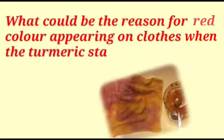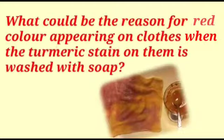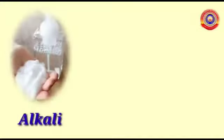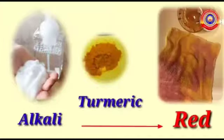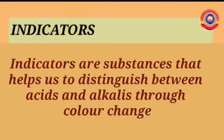What could be the reason for red color appearing on clothes when turmeric stain on them is washed with soap? Yes, soap is an alkali. Turmeric gives red color with alkali, so it is clear that turmeric is an indicator which helps to distinguish alkali.